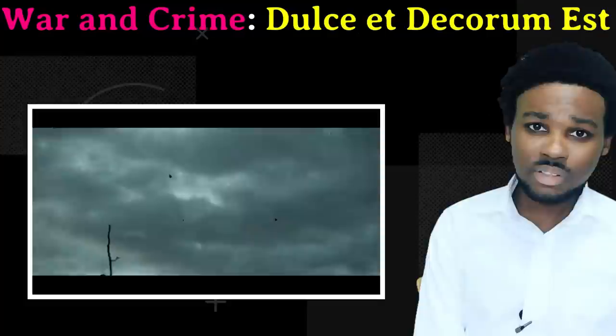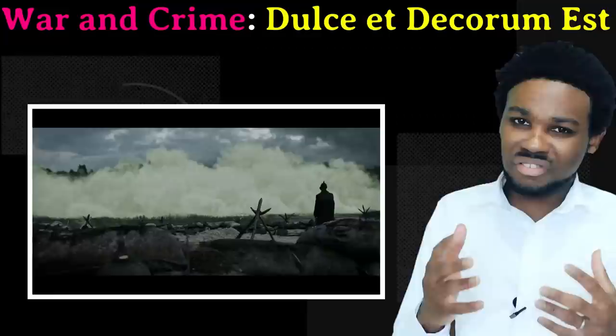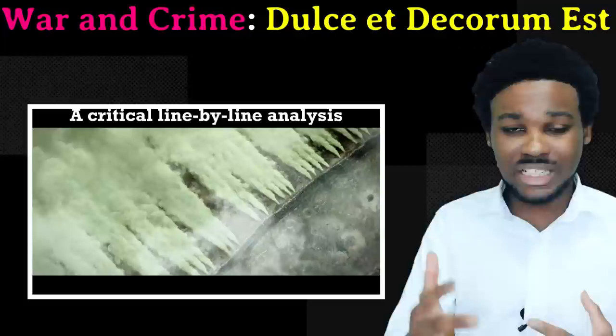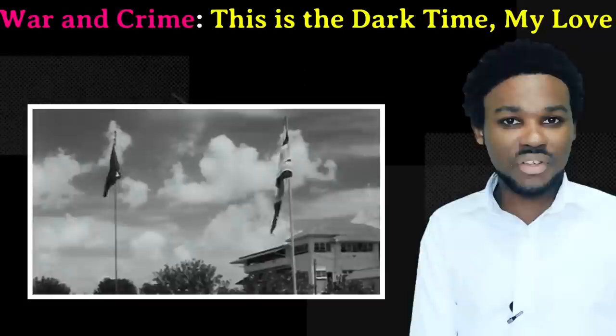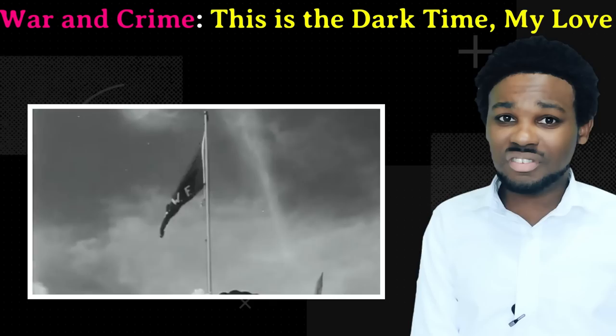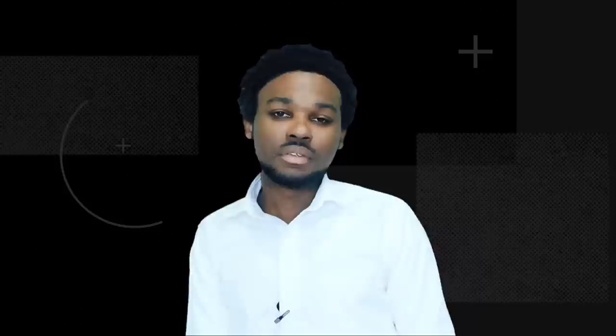Dulce et Decorum Est is the most brutal war poem ever written and certainly the most graphic poem on the syllabus. The poem is saying, in a nutshell, that even though many people consider war to be cool, glorious, and patriotic, it is really savage, brutal, inhumane, and pointless. The speaker takes us through a traumatic battlefield experience where he watches one of his comrades die a horrible death. In This is the Dark Time My Love, we're seeing less of the war itself and more of its effect on the people — the invading soldiers are well armed and said to be the men of death.